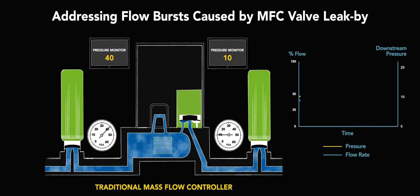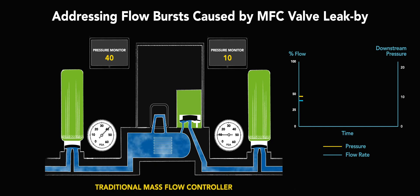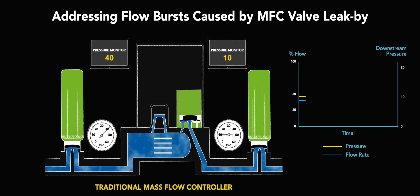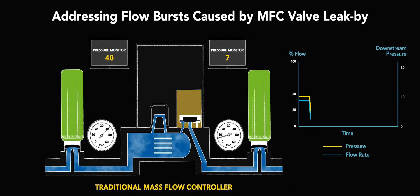A command setpoint is sent to the mass flow controller to control the desired gas flow rate into the process chamber. A zero command setpoint is then sent to the MFC, closing the MFC valve.